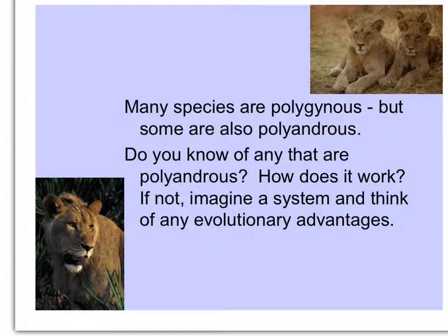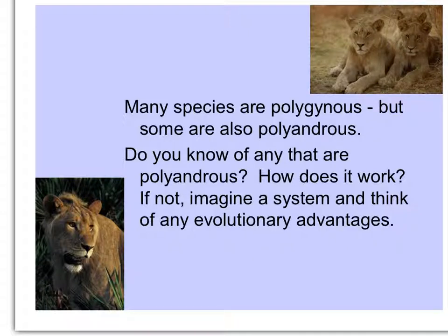Many species are polygynous, but some are also polyandrous. Let's think of how polygynous mating systems work — maybe an example would be lions. Also look for examples of polyandrous species and how it works in different situations. If you can't find any, make one up and think of any evolutionary advantages.